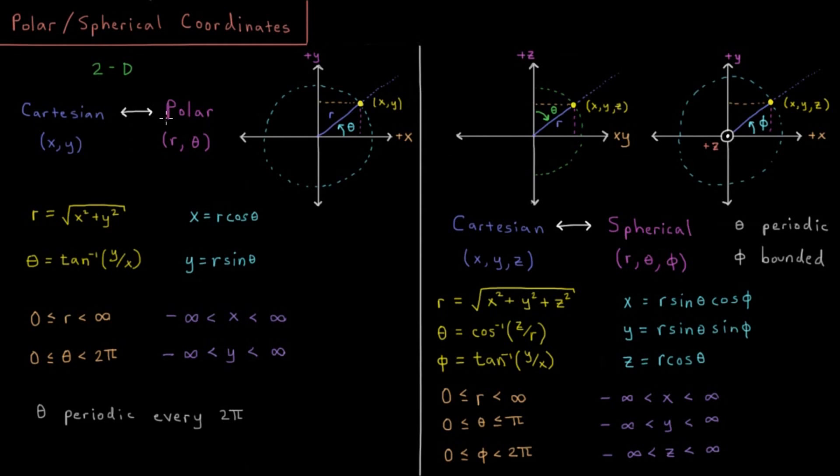Or we could represent it in polar coordinates having a distance from the origin r and an angle from the plus x axis theta.